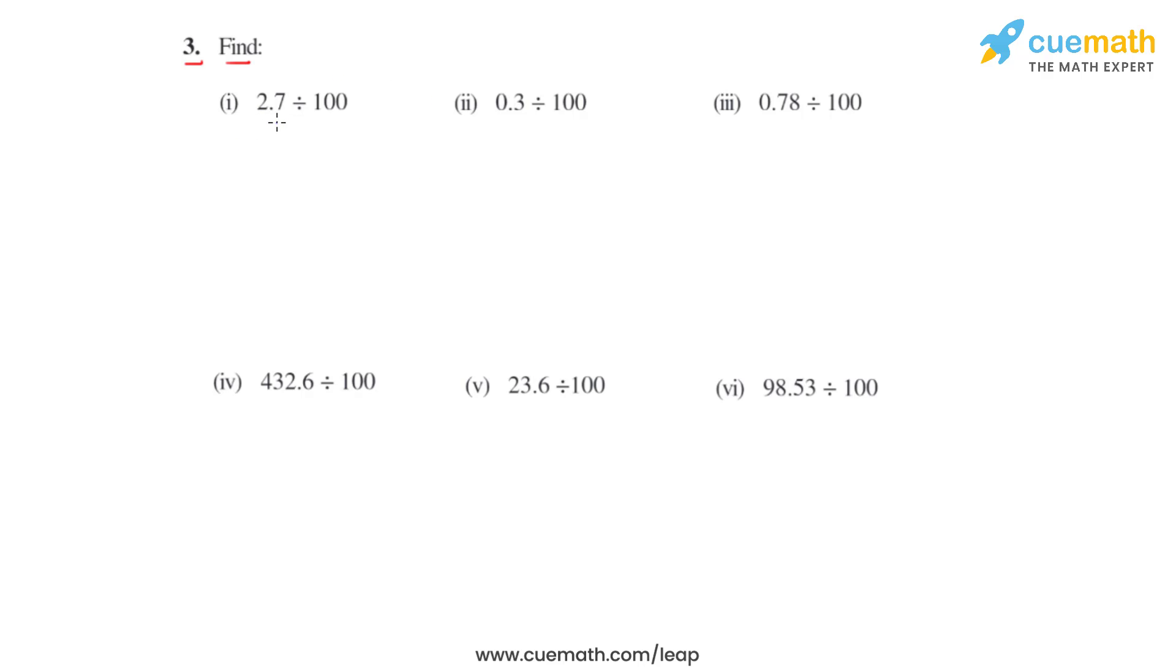Starting with bit (i), we have 2.7 divided by 100, so the decimal moves two places towards right. The answer for this bit will be 0.027. Coming to the second bit, we have 0.3, so the decimal again moves two places towards right and the answer becomes 0.003.